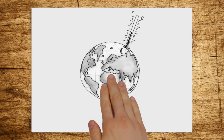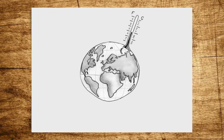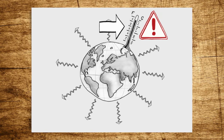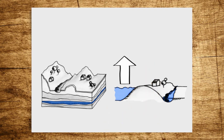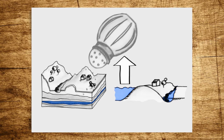Due to climate change, global temperatures are rising, which will then also lead to more evaporation. As a consequence, less water seeps into the ground for groundwater formation. Due to predicted sea level rise, in coastal regions, the salt water can increasingly intrude into aquifers, which results in groundwater salinization.